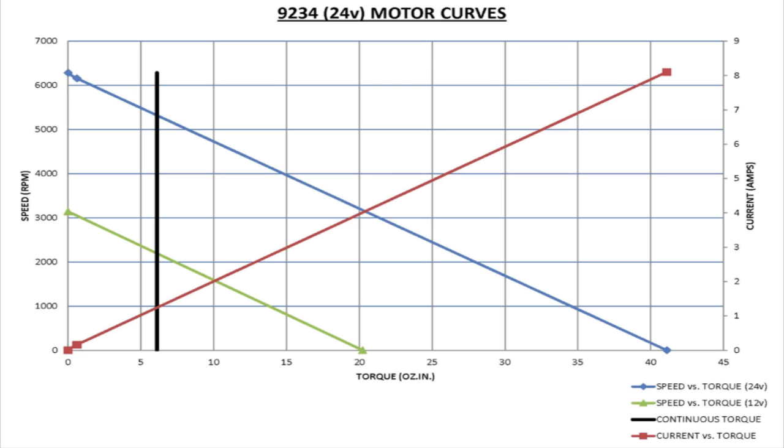It is possible to run any of our motors at a higher or lower voltage than the rated value. In this example, the green line shows the speed torque curve of this 24 volt motor when it is running at 12 volts.